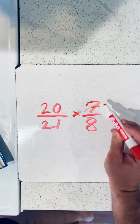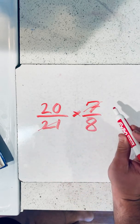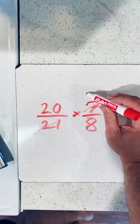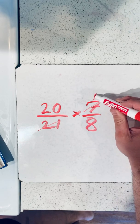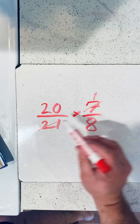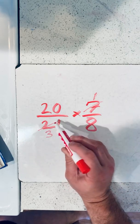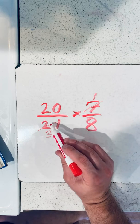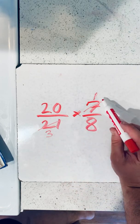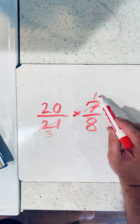So we take the 7 and the 21, right? 7 goes into 7, 7 times, so that becomes a 1. Now 7 goes into 21 three times, so it becomes a 3. 7 times 3 is 21. 7 goes into 7 one time.